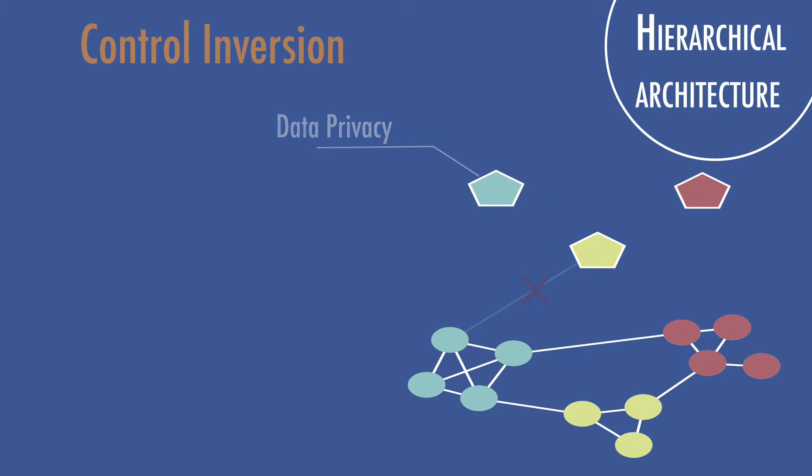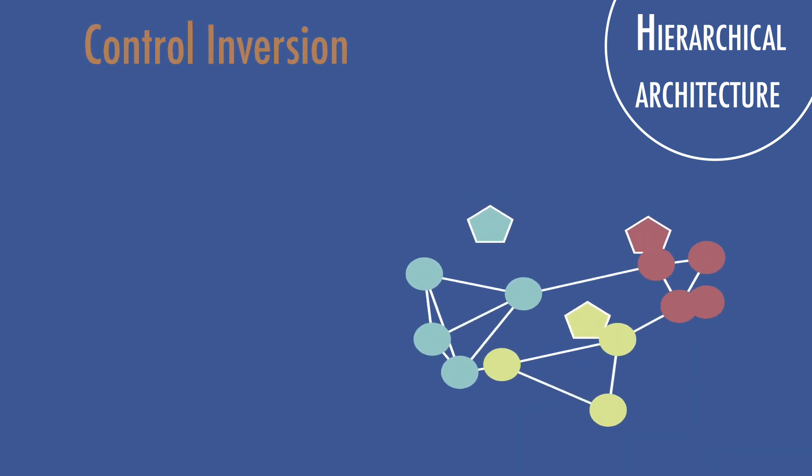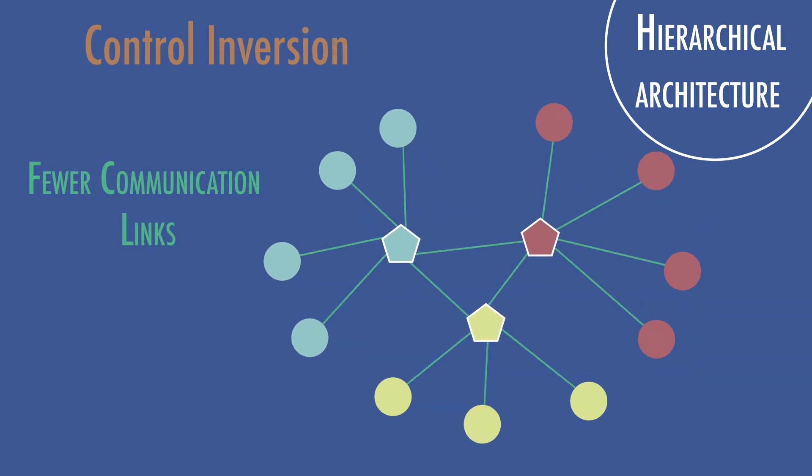Each coordinator computes a distinct control signal based on the averaged measurements only and broadcasts this signal to every node inside this cluster. The architecture requires significantly fewer communication links than a conventional controller.